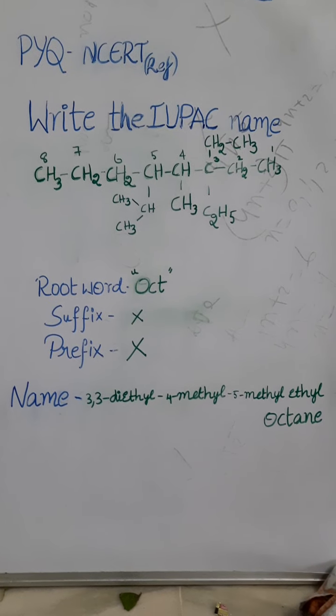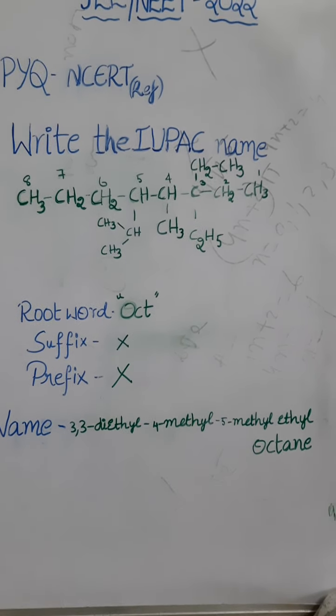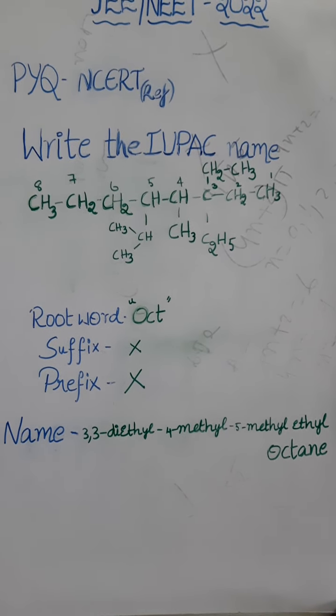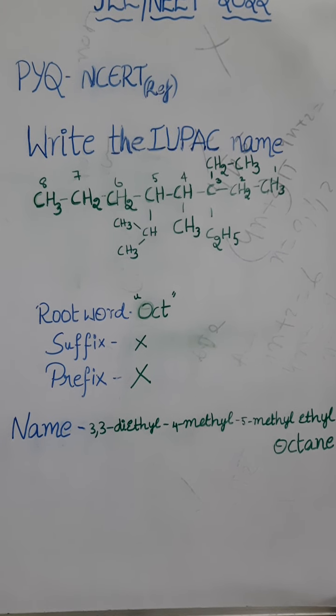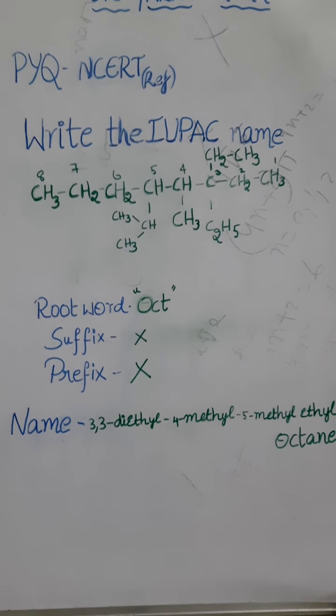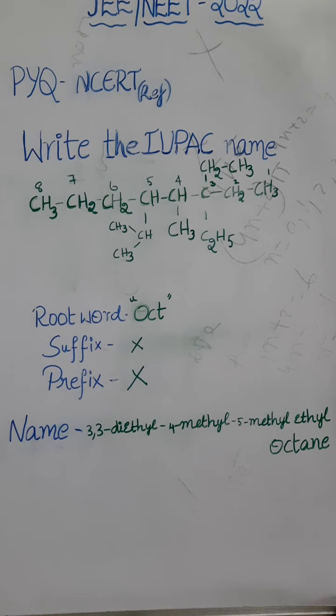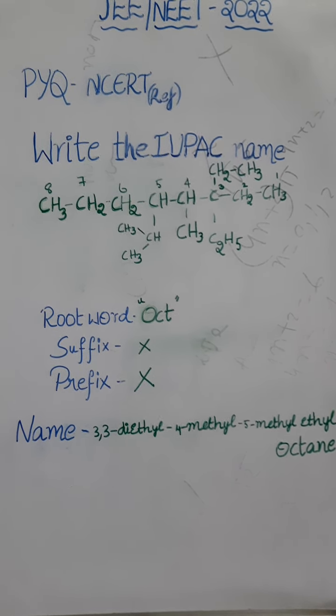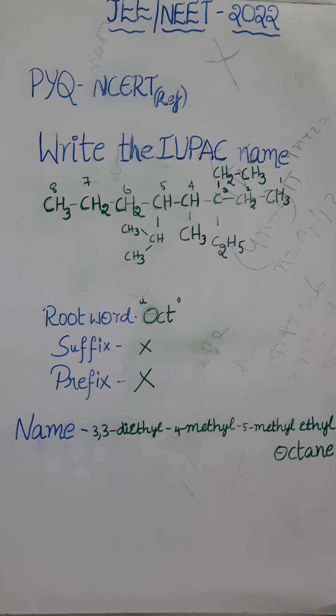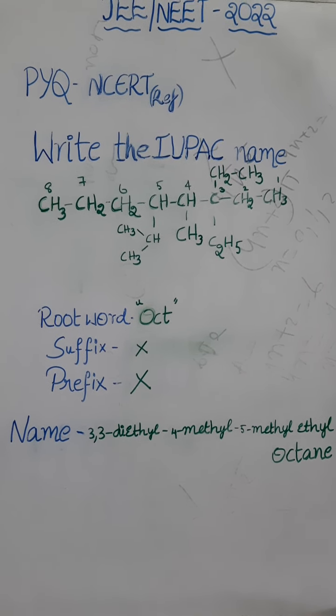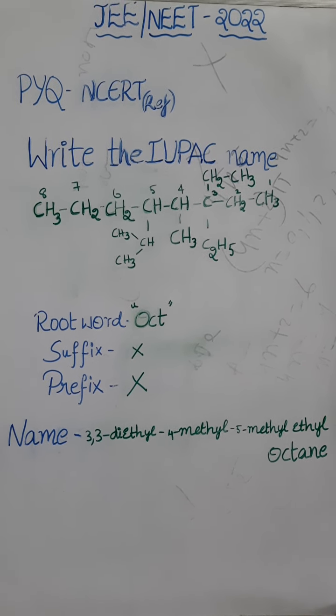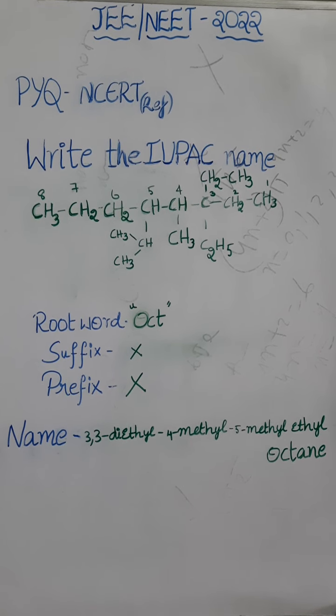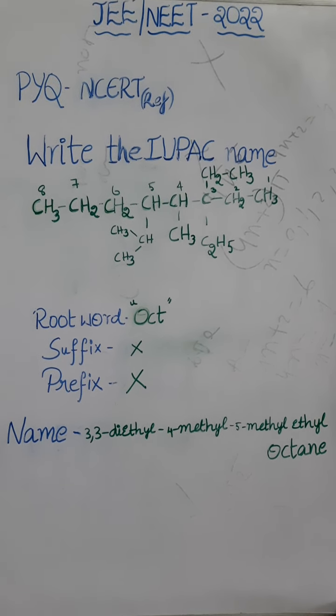So if we observe keenly, the name of this compound is 3,3-diethyl-4-methyl-5-methyl-ethyl-octane. And an important point to keep in mind is following the alphabetical order accordingly. So this is the question and the answer is 3,3-diethyl-4-methyl-5-methyl-ethyl-octane.